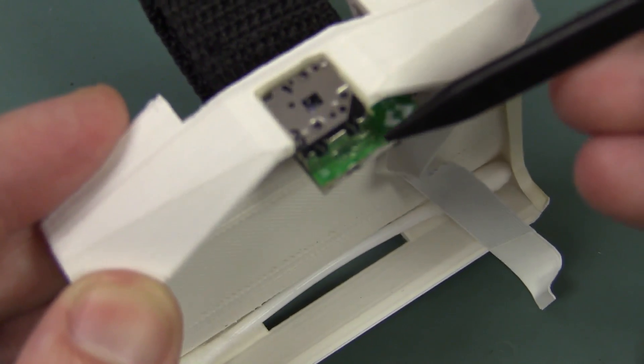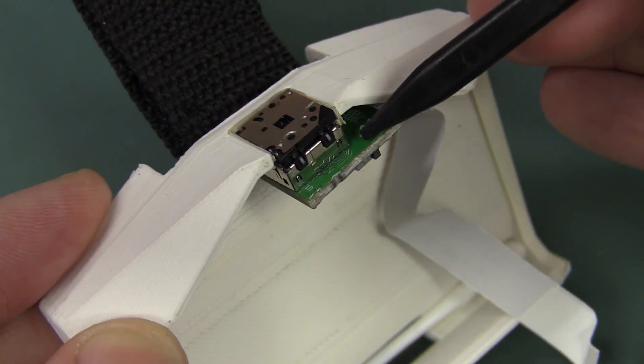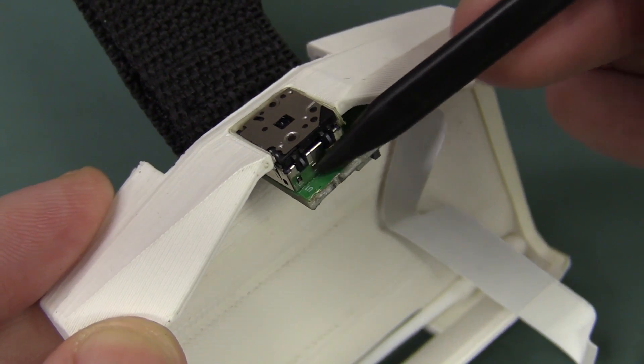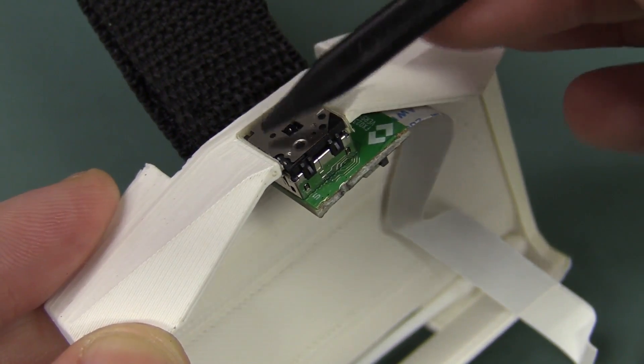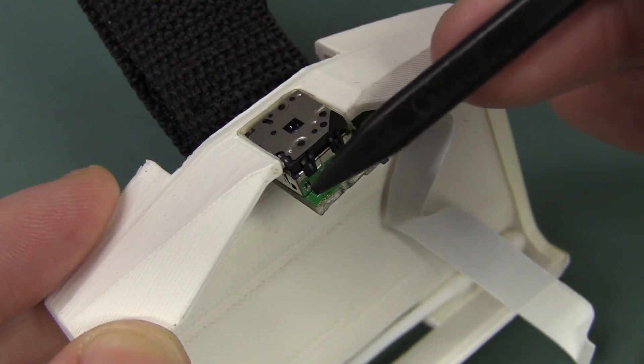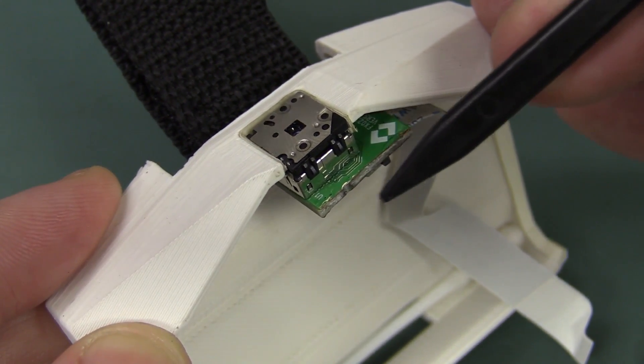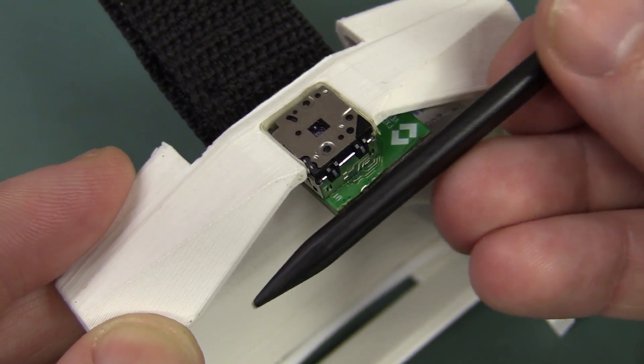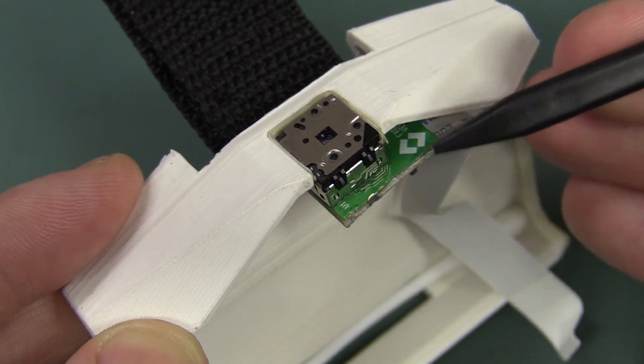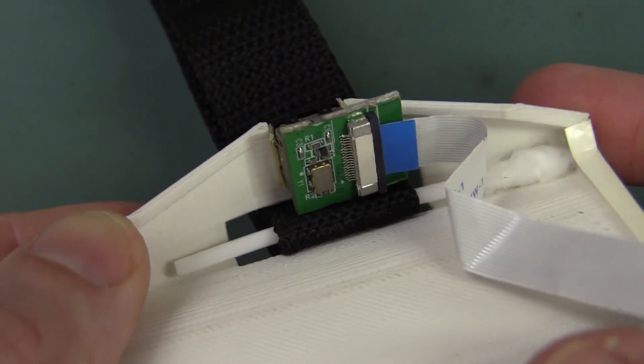But thankfully, the layout person who designed this board sort of just kept all the traces, as you would, kept the traces short. It didn't extend them right out here like this, so we could actually just shear that off. We just missed a via or a trace down in there.